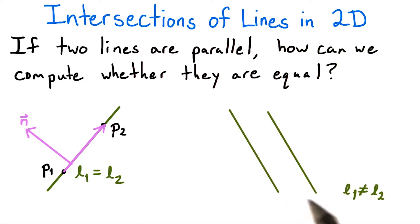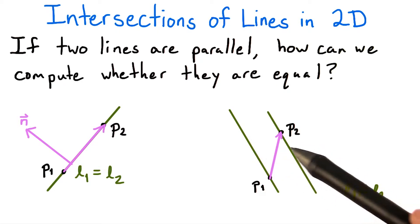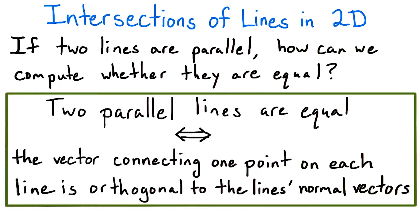On the other hand, suppose the two lines are not coincident, but still parallel. Then these lines have no common intersections. So, if we pick a point from the first line and a point from the second line, then the vector connecting the two points won't be in the direction of the lines. In other words, this connecting vector won't be orthogonal to either of the normal vectors.